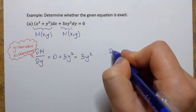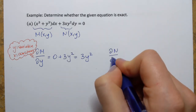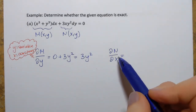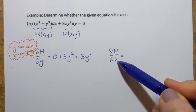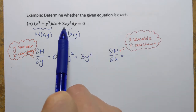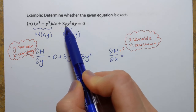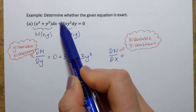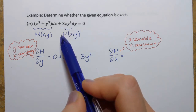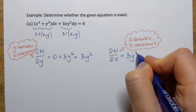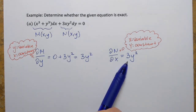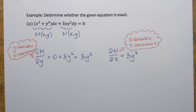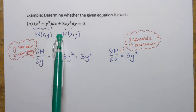Now I'm going to take the partial derivative of function N, but with respect to x. Here we have y, but we're differentiating with respect to x, treating x as the variable and y as the constant. If N is 3xy², then x is the variable (x to the power 1) and 3y² is the constant. The derivative just drops x and we're left with the constant 3y². Comparing both results, they are exactly the same — they're equal. So since they're equal, this is an exact differential equation.